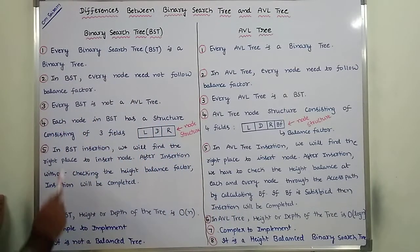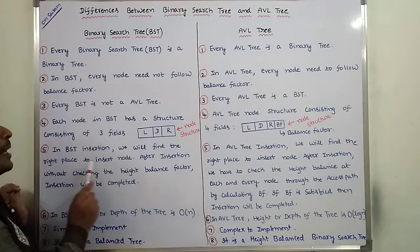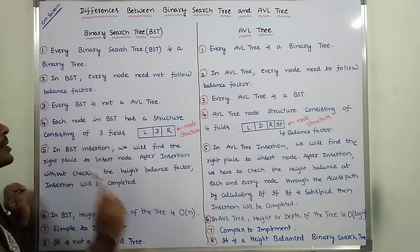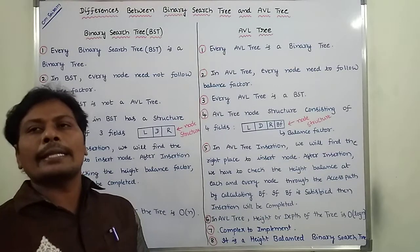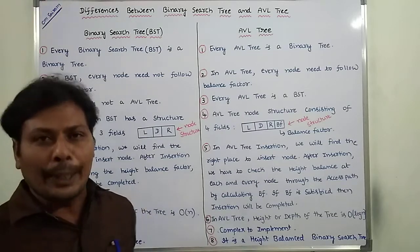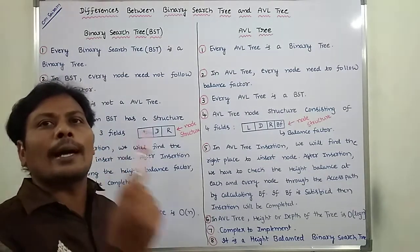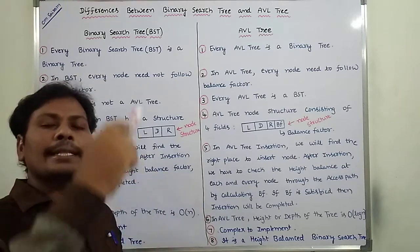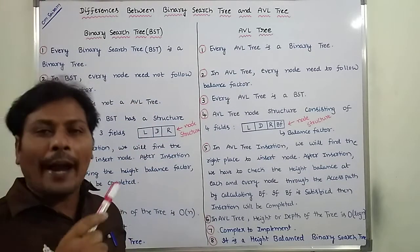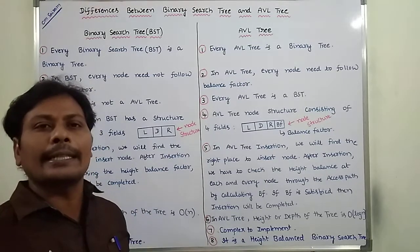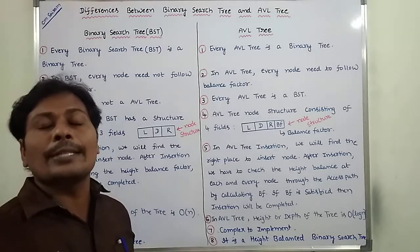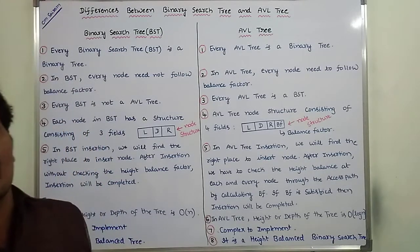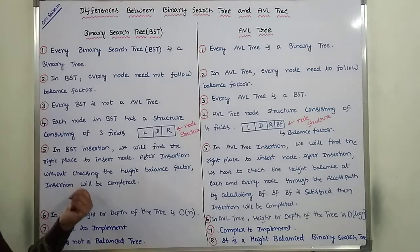Fifth point: in binary search tree insertion, we find the right place to insert the node. After insertion, without checking the height balance factor, insertion is completed. The node value is compared with the root node value — if it is less than the root node, go to the left subtree; if it is greater, go to the right subtree. Find the suitable place, insert the node, and there is no need to check the height balance.